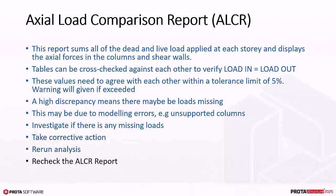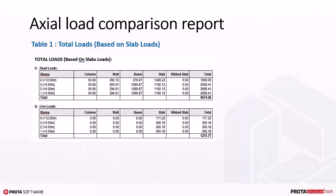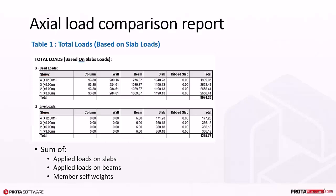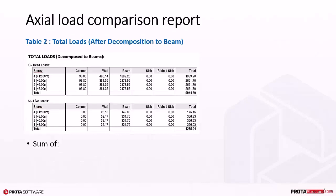Table 1 is the total loads based on slabs. It is the sum of applied loads on slabs, applied loads on beams and member self-weight. In short, it is the input loads based on what is modeled. You can take this as the correct dead and live load of the model, provided you have entered the loadings as intended. Table 2 is the total loads after slab load decomposition to beam.